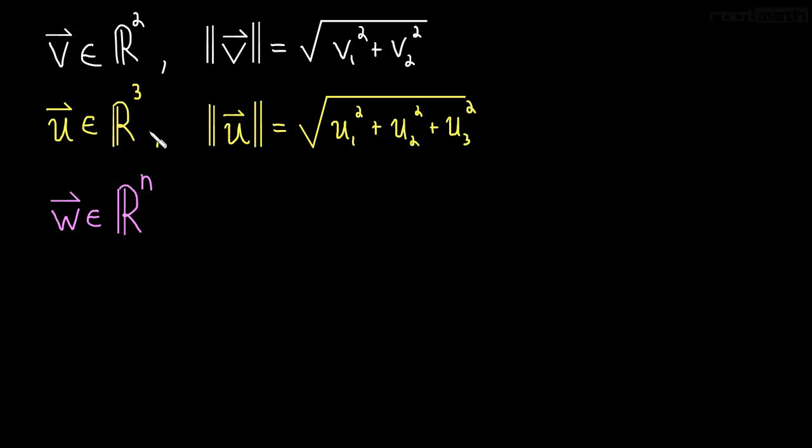In three dimensions, in a vector with three components, we derived this length using the Pythagorean theorem twice in a row. You can go back and watch that video if you want. And we found the length of a vector in R3 is just the square root of u1 squared plus u2 squared plus u3 squared.